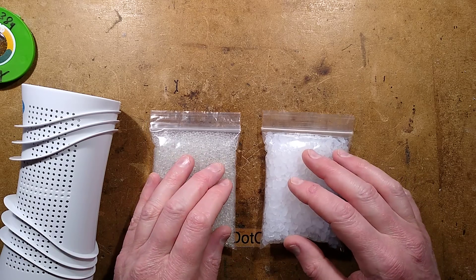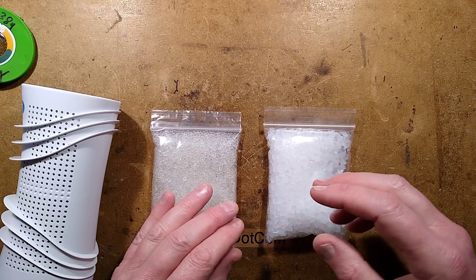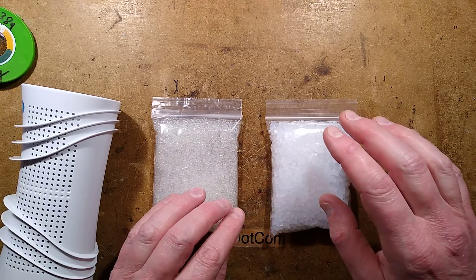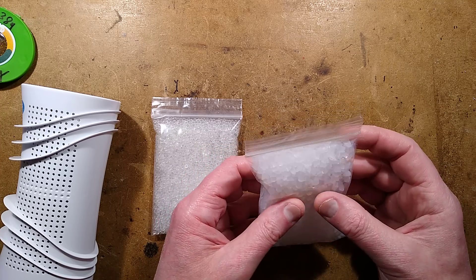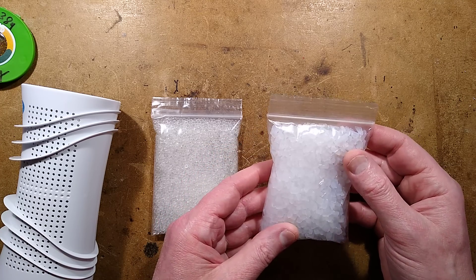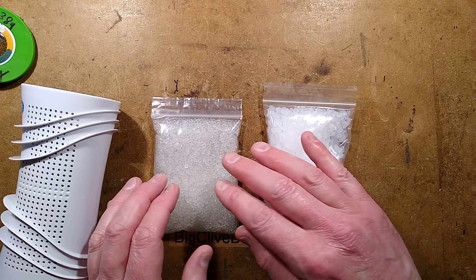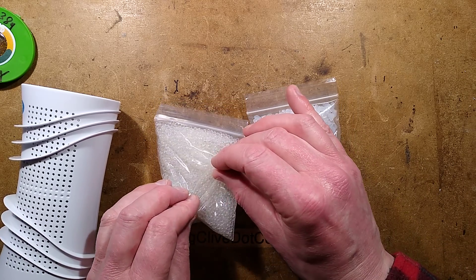I have just completed an experiment and I'd like to share the results with you because I think you might find it useful. You see, I'd heard that cat litter, the crystal cat litter, in this case Bob Martin Felite, may actually be made of silica gel and as such some people are using it as a desiccant in the same way as the silica gel beads.